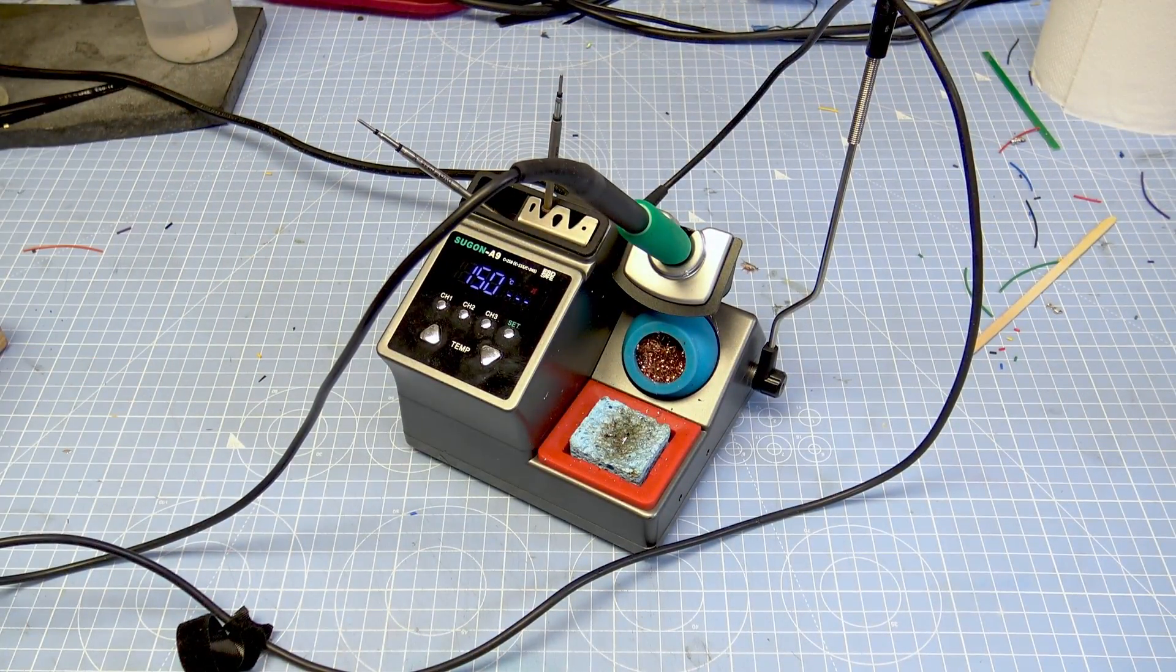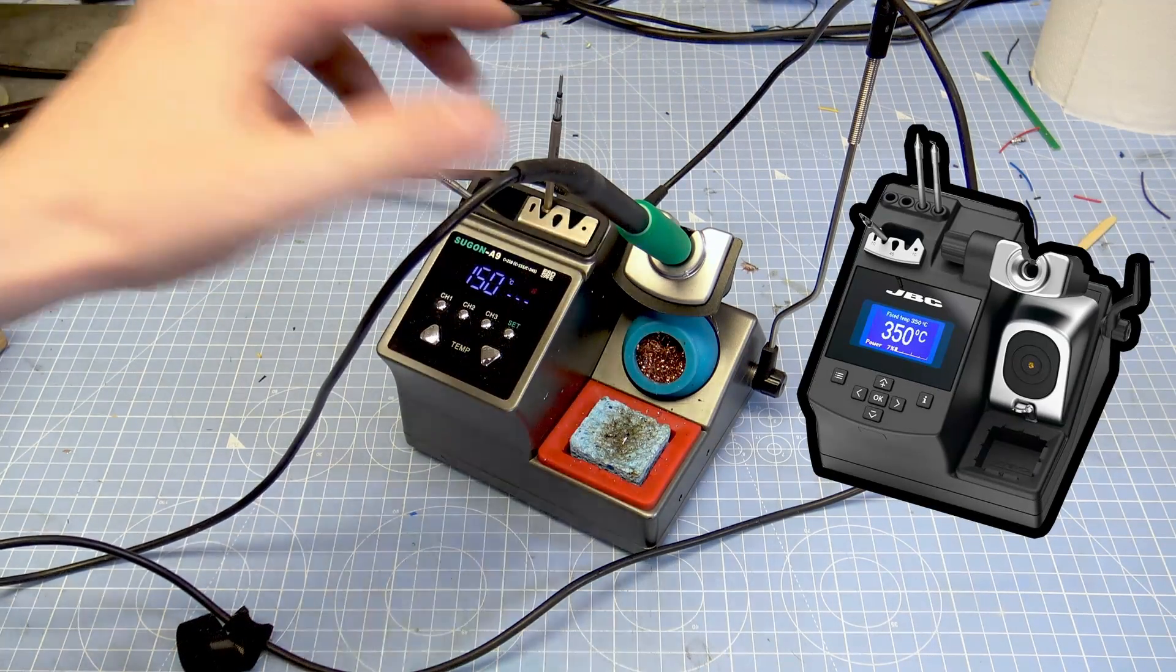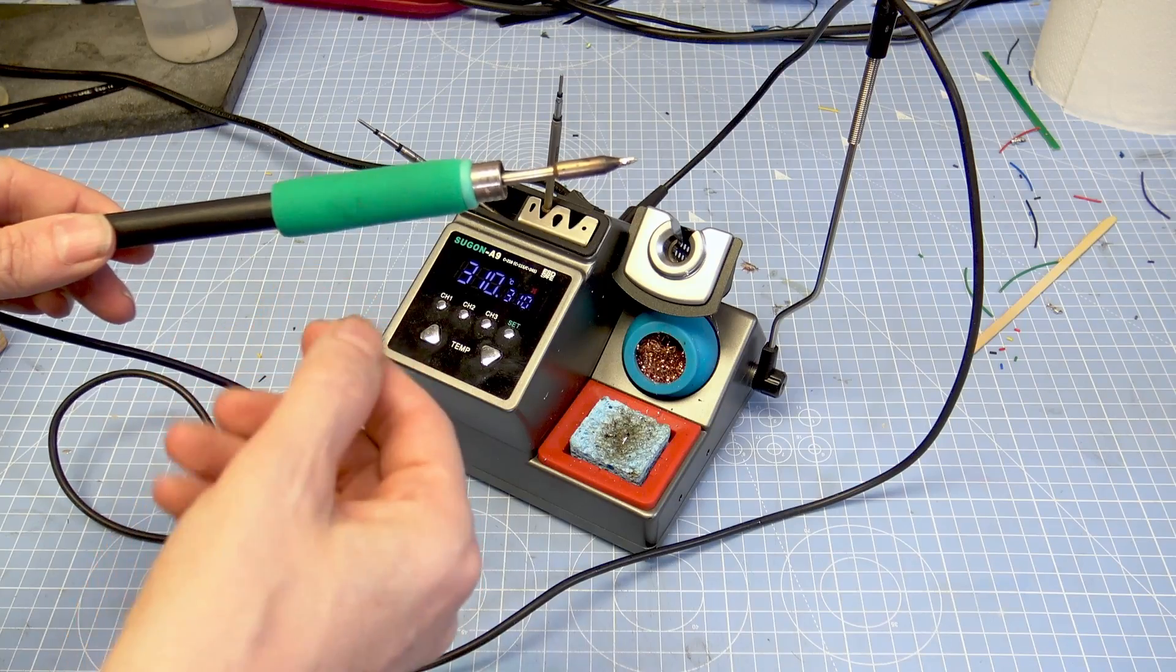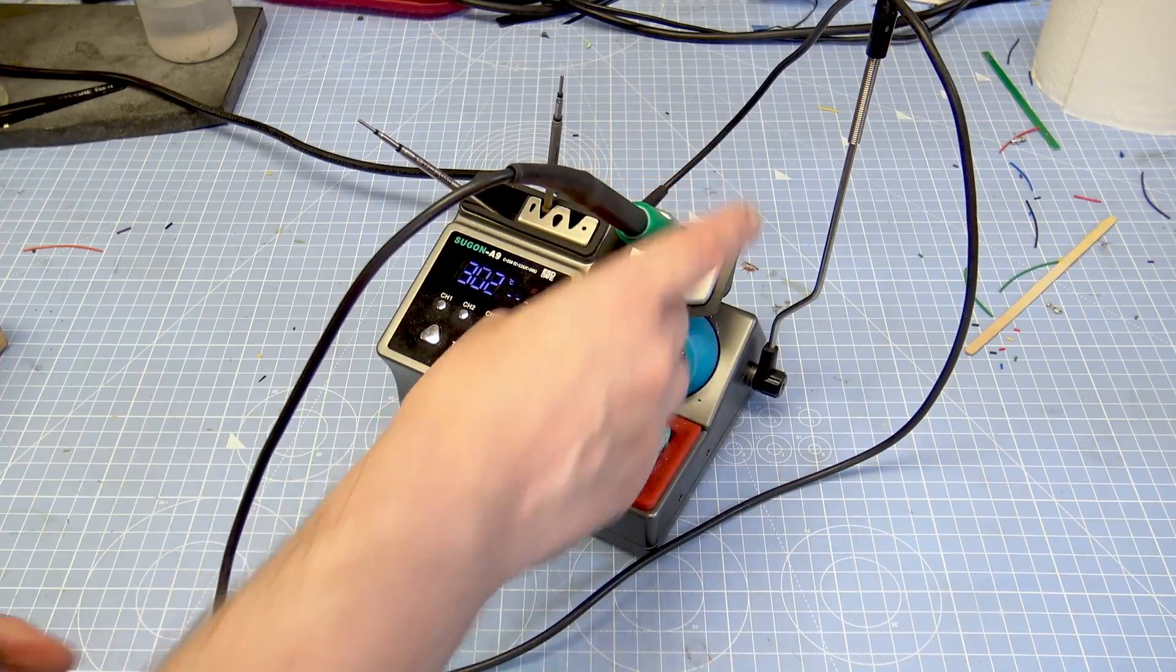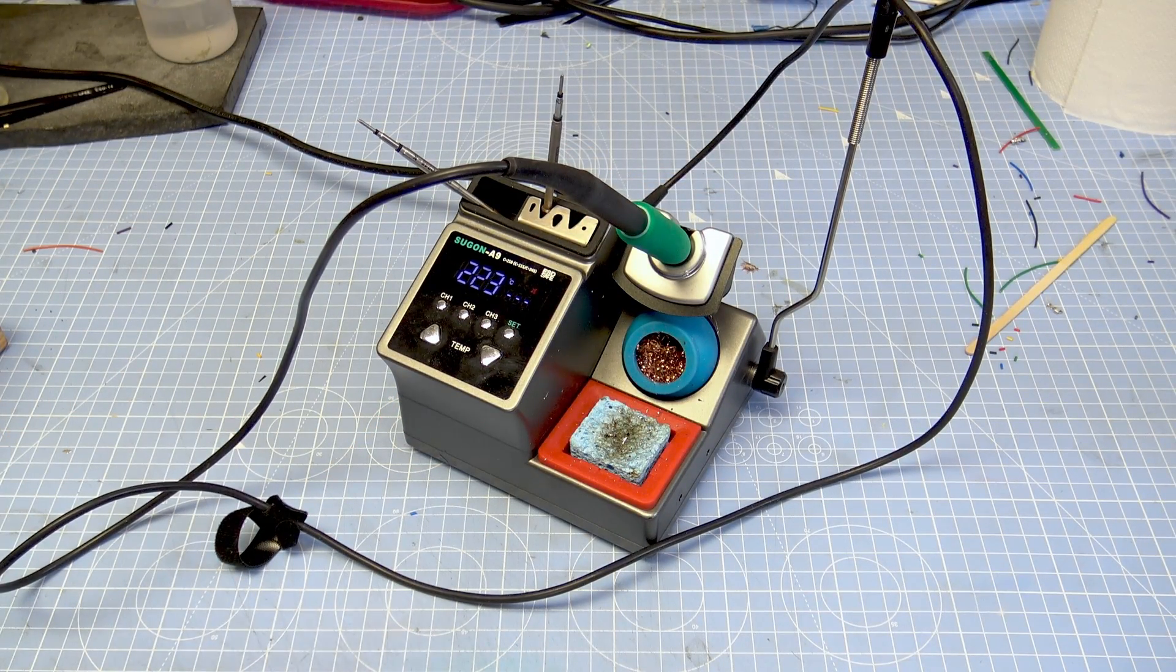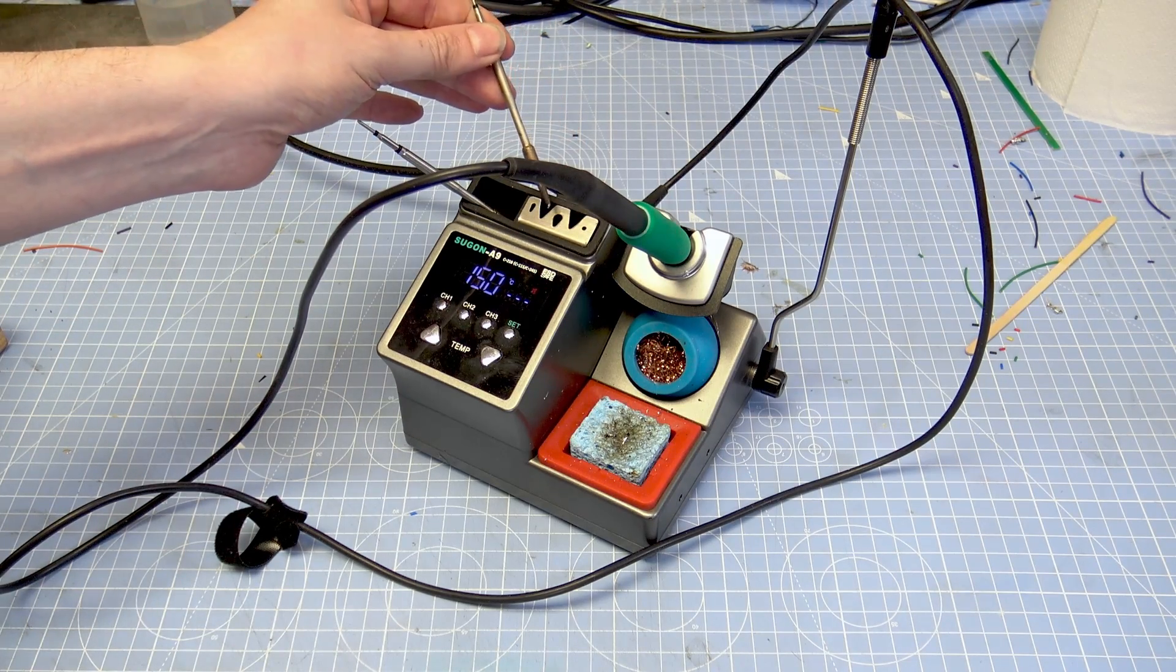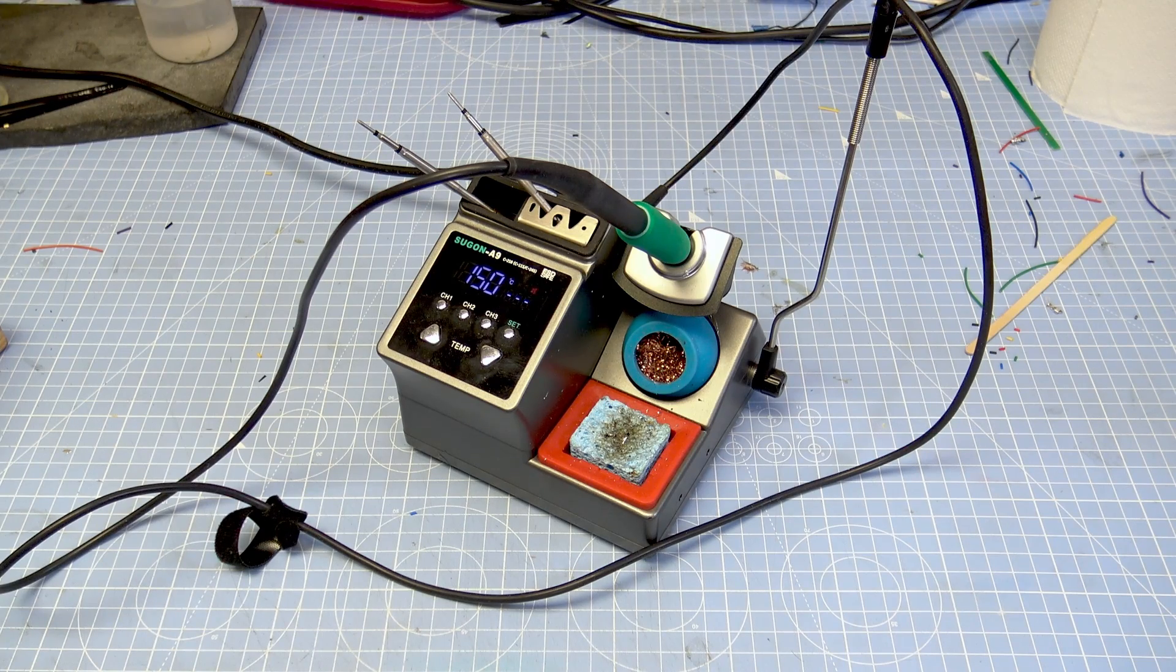This is what I bought—the Sugon A9. It is a clone of a JBC and is even sold as compatible with JBC tips. It comes in two different styles of hand grips. This one is for the 245 type tips, and then there's another one which is, I believe, for the 210. The 210 are for more very small, minor detail work. When you buy it, it does come with a few options for tips. They're okay.